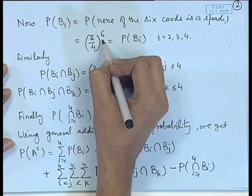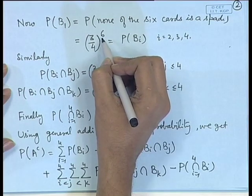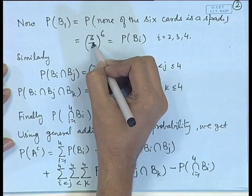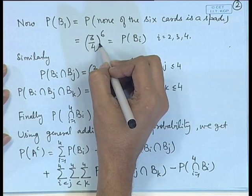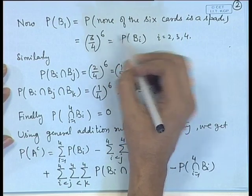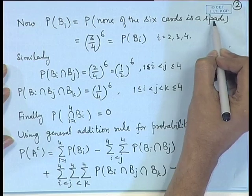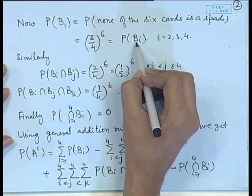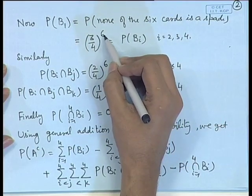Since the draws are independent and identical — because it is with replacement and always 52 cards — the probabilities multiply: (3/4)^6. The same argument holds if we replace 'spade' with any other suit. Therefore P(B_i) = (3/4)^6 for i = 1, 2, 3, 4.